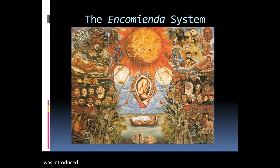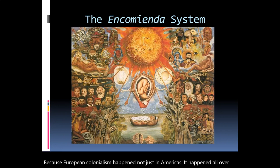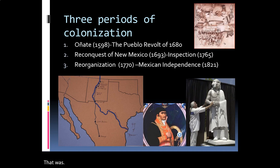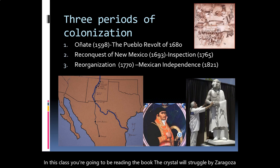Here's a mural about the system of European colonialism, which happened not just in the Americas but all over the world. In this class, you're going to be reading the book The Crucible Struggle by Zaragoza Vargas, and I want to briefly go over how this book is broken down so you can understand how to approach your reading.